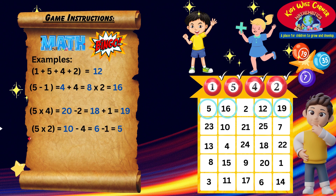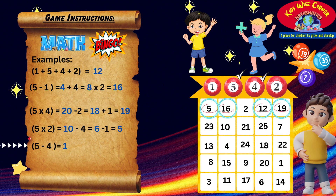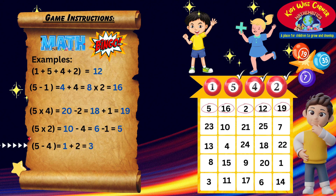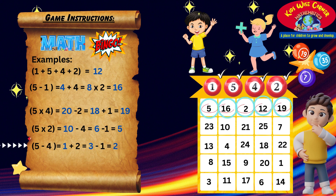Last one. Five minus four is one. To the one, add two, so one plus two equals three. Then subtract one, so three minus one equals two. We found all the numbers in that row. So you're the Math Bingo winner!